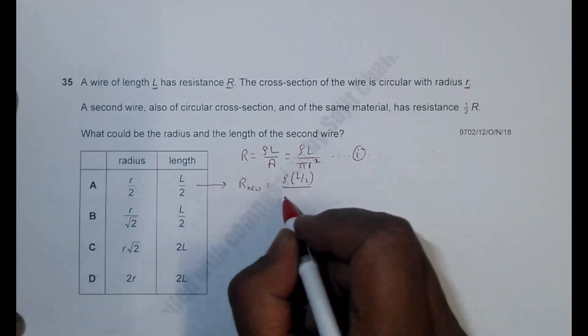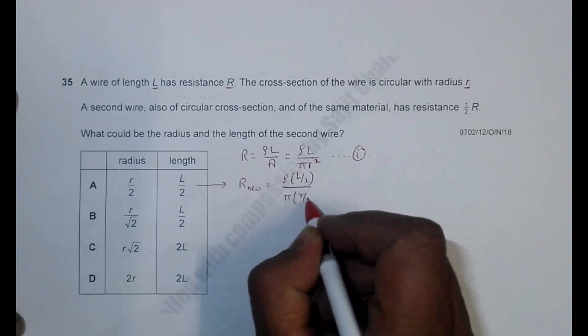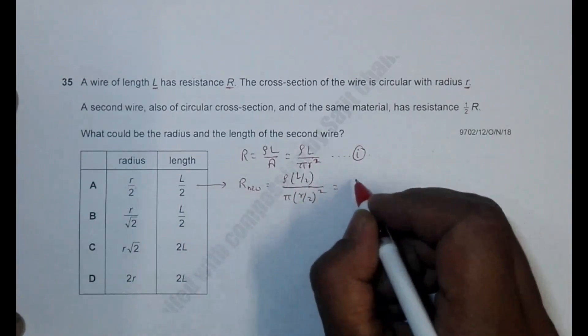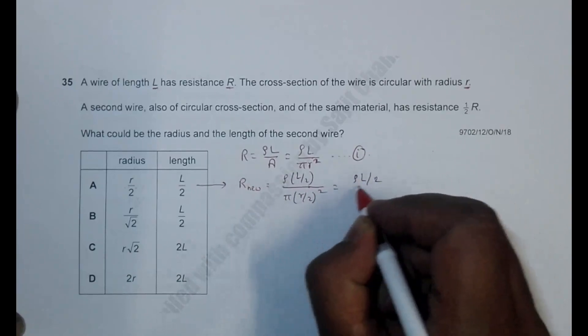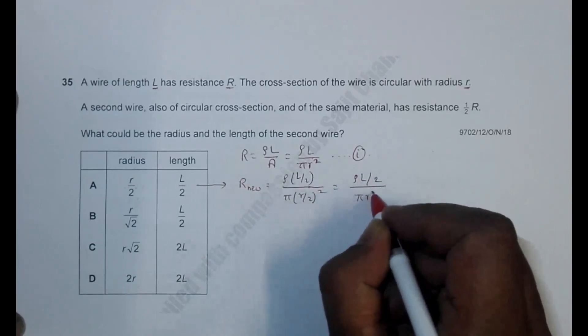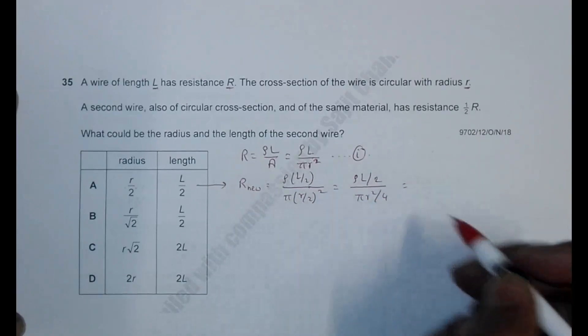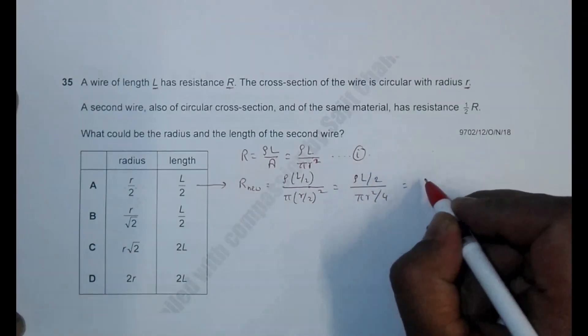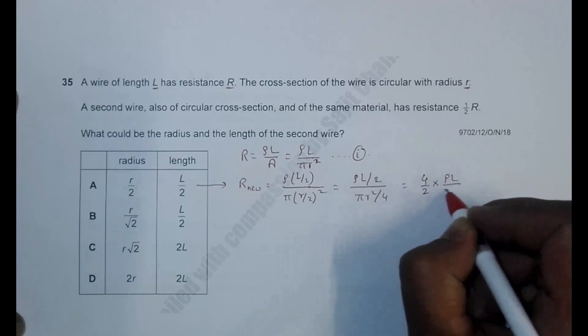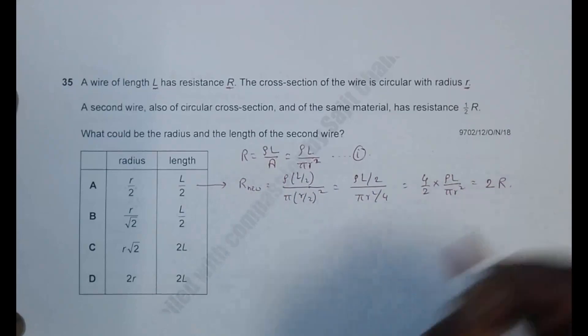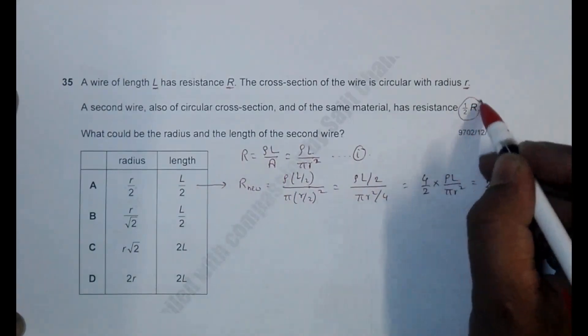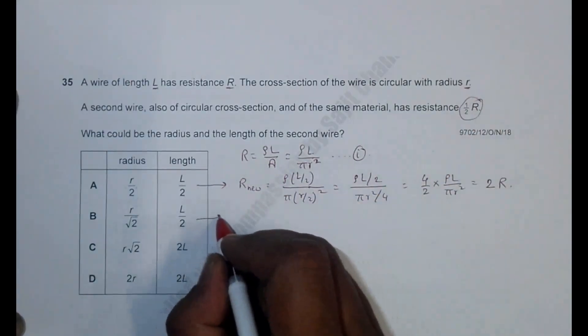Equal to ρ times L/2, then I'll have the radius is r/2, so it is π(r/2)² which should equal 1/2 and 1/4. So it is ρL/2 divided by πr²/4. This 4 will come here, so it will be 4/2 times ρL/πr². That's equal to 2R, so this is not correct.